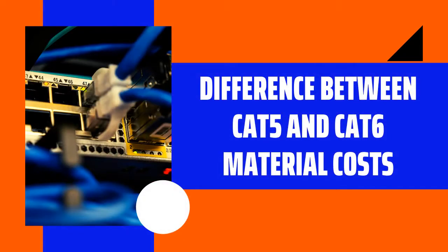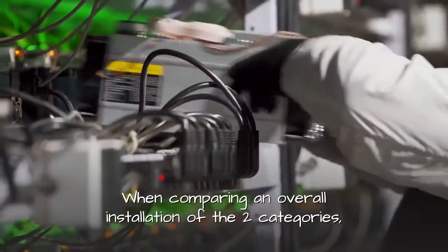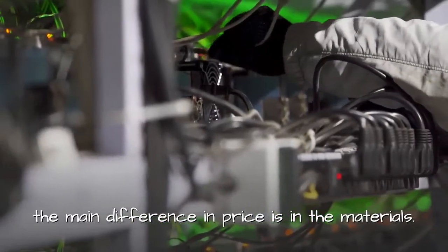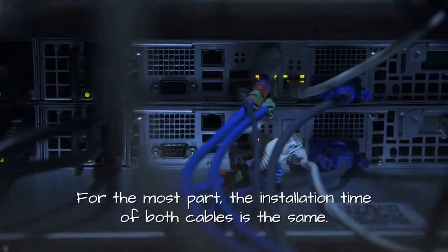Difference between CAT5 and CAT6 material costs. When comparing an overall installation of the two categories, the main difference in price is in the materials. For the most part, the installation time of both cables is the same.